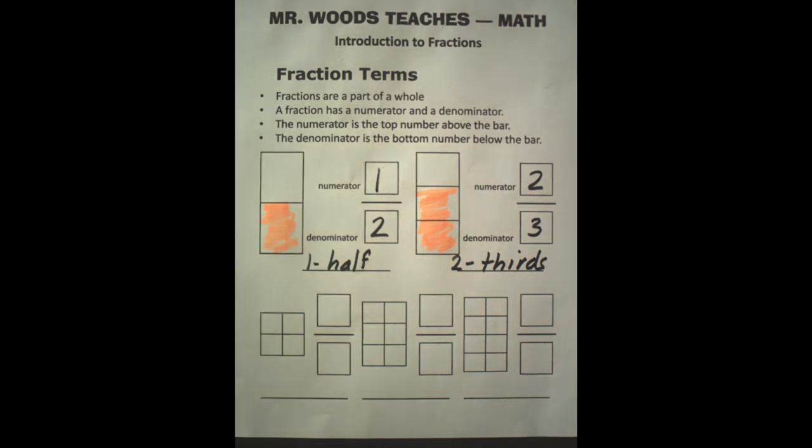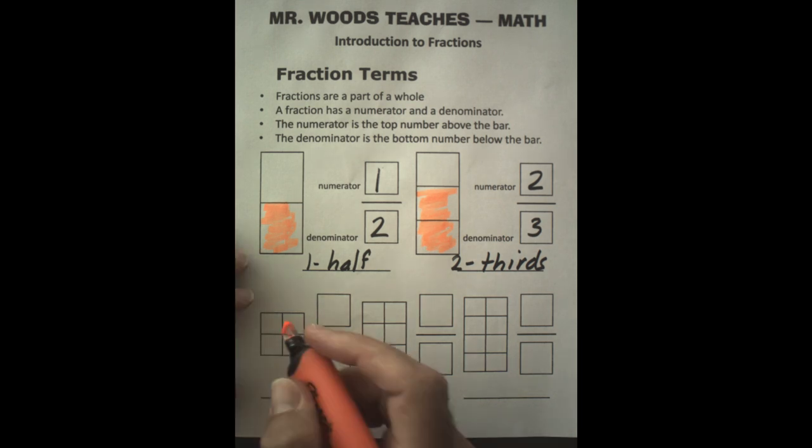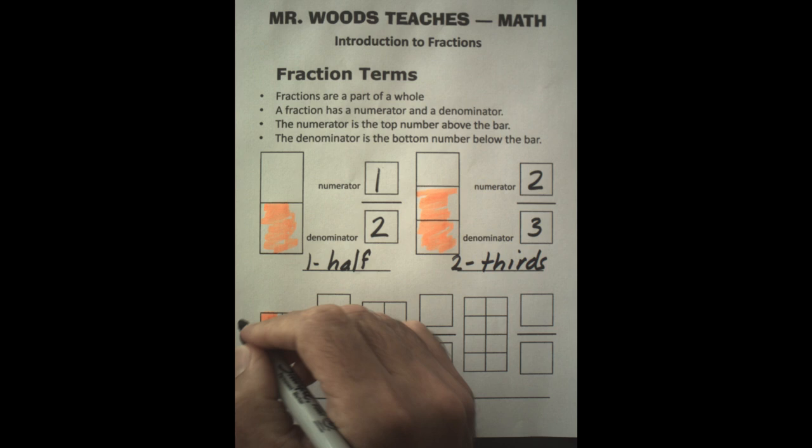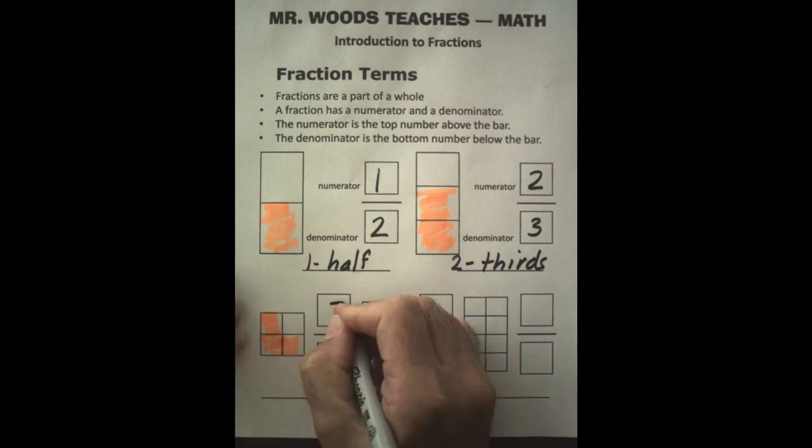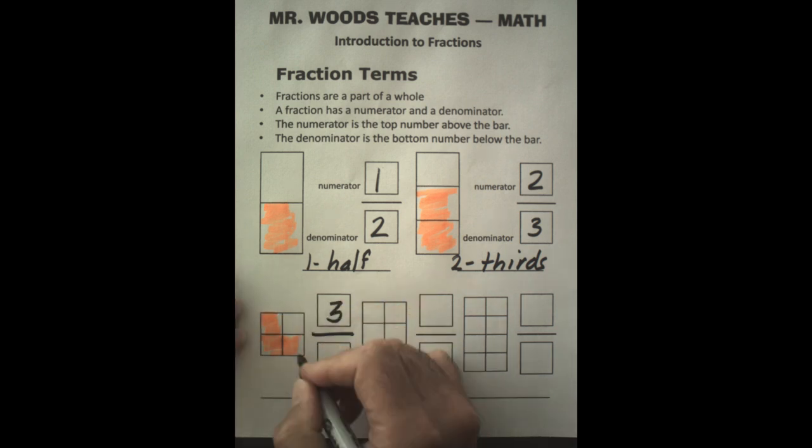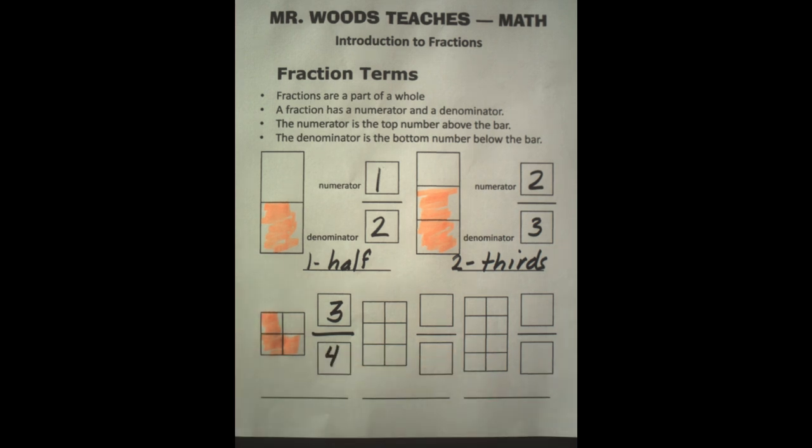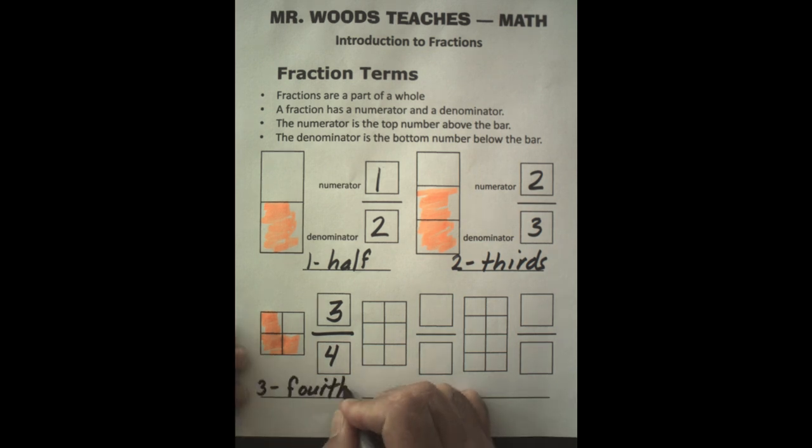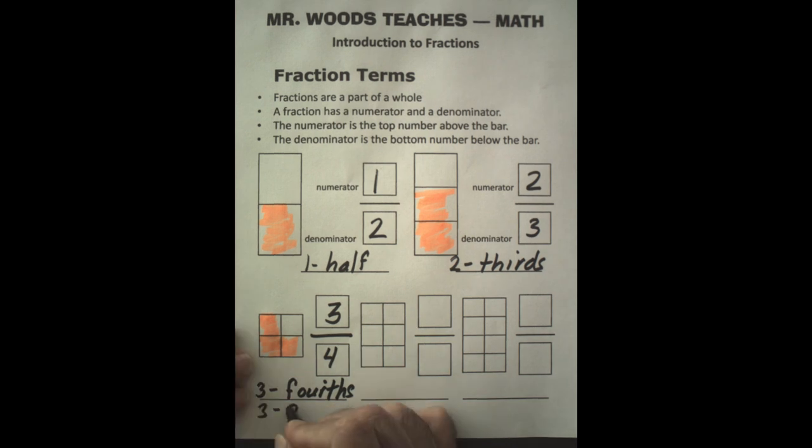Next up, I have a box with four equal pieces. If I shade in three of those, again, I put the number of shaded at the top, so that's three. The bar, and then I'm going to have the denominator as four, because that is the part of the whole. This is going to be three fourths or three quarters.